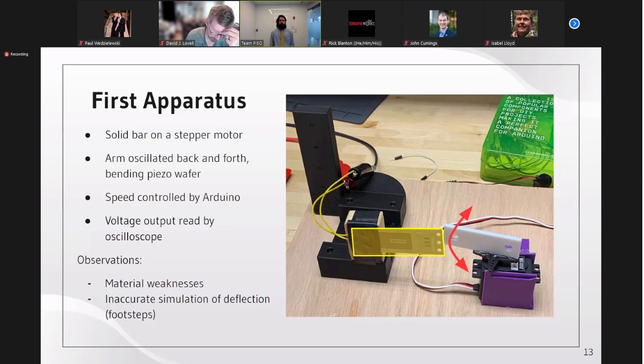Using an Arduino, the group could easily control the speed of the oscillations, which gave us a variable to control during testing. The piezoelectric was connected to a simple circuit with a resistor, which was used to read the voltage drop induced by the piezoelectric effect. This voltage was read by an oscilloscope and output to a CSV file for analysis. This design was a rapid prototype and had some notable issues. Most importantly was the material weakness. The wafer was fastened down using electrical tape, which wore over multiple trials and skewed our results. Additionally, this simulation was inaccurate to how we expected the piezoelectric to be treated in reality. The arm oscillates back and forth, whereas in reality, the motion would be downward only. Due to these issues, we had to improve upon this design.